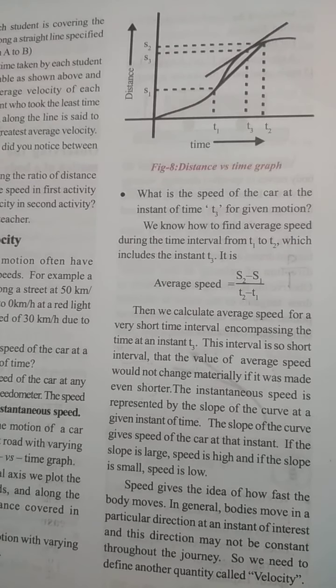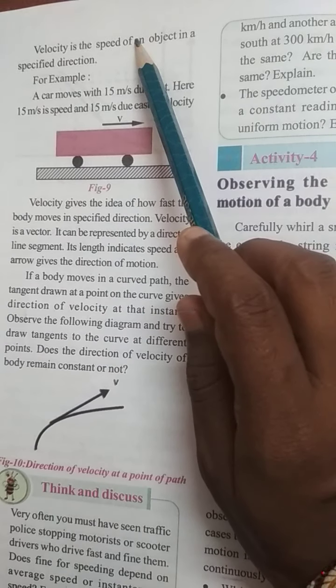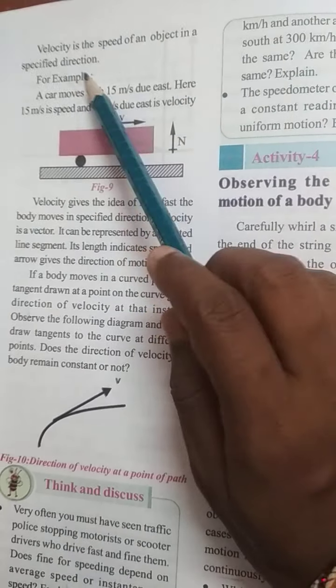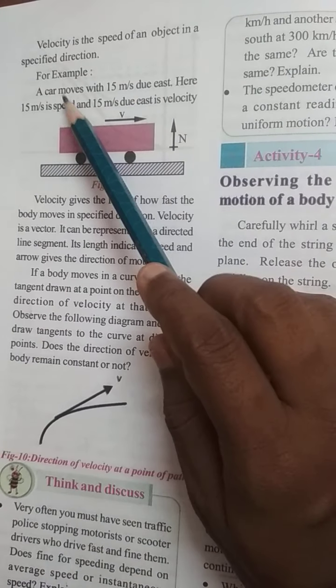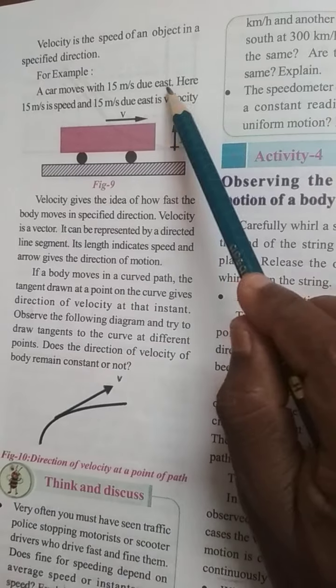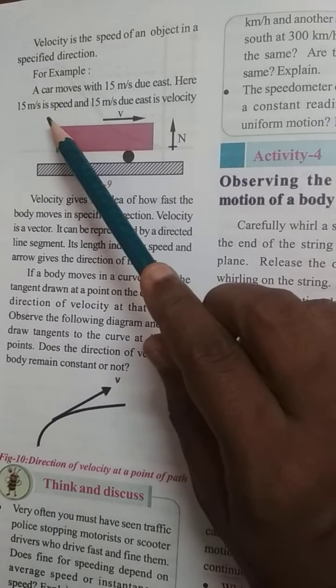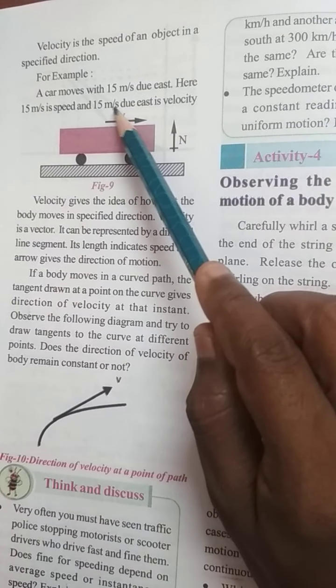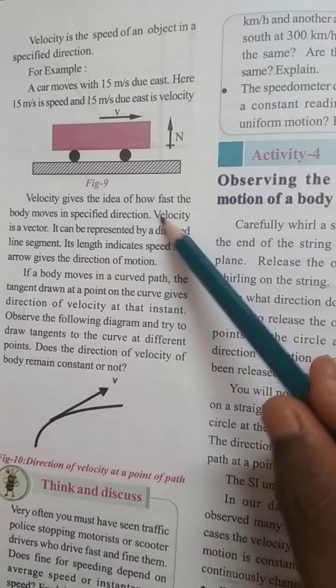Velocity is the speed of an object in a specified direction. It is speed but in a specified direction. For example, the car moves with 15 meters per second. Here, 15 meters per second is speed and 15 meters per second south can be used as velocity.